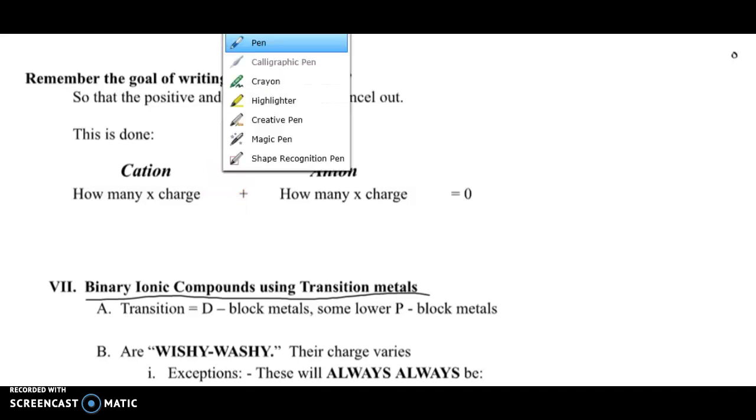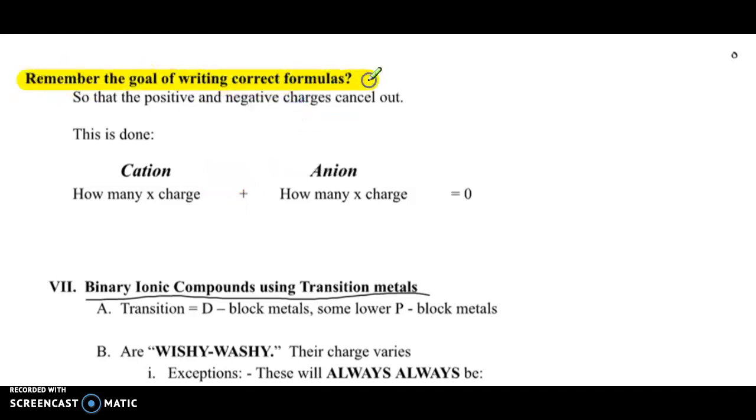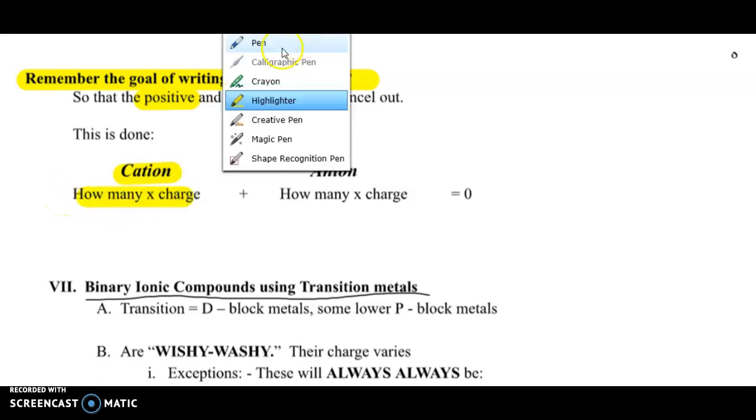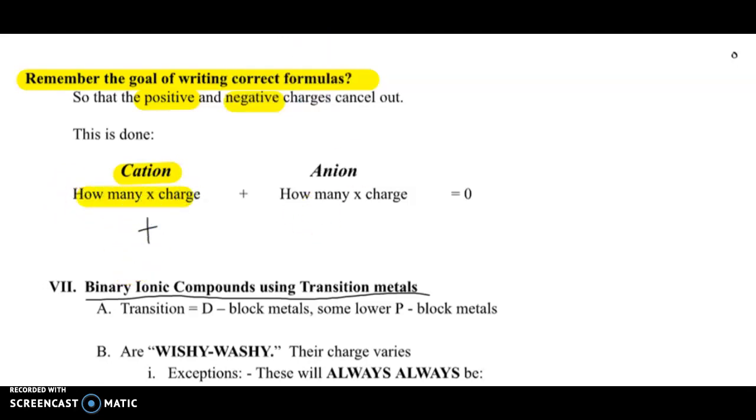It's the same theory as we learned in our previous video, but it's a little bit trickier. So remember, here's our main goal. Whenever we're writing the correct formulas, we want to get the positive and negative charges to cancel out. So to do that, we can use the simple crisscross method, or if you want to draw it out more visually, we look at how many cations there are times the charge to figure out what the total positive charge is.